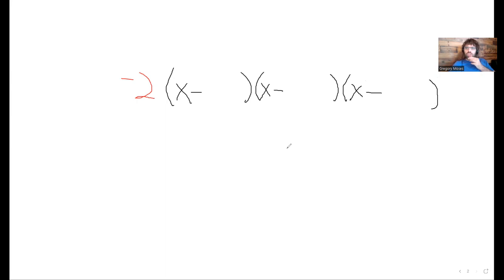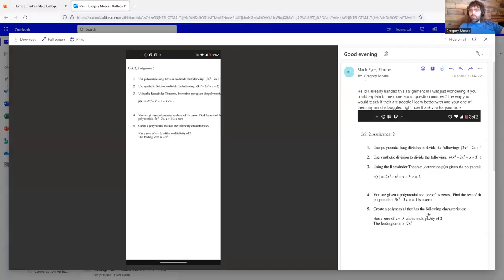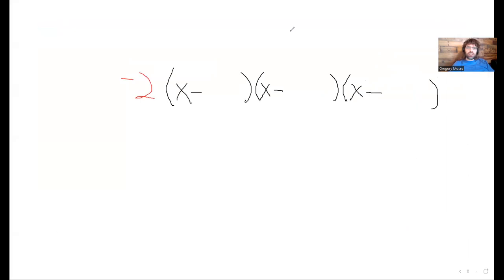So we're looking for something like this. And what other information are we given? We're given some information about the roots. We're told that 0 is a root and that it has multiplicity 2. Let's jot that down.